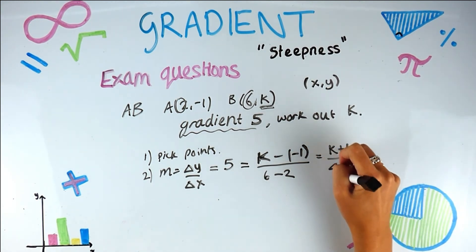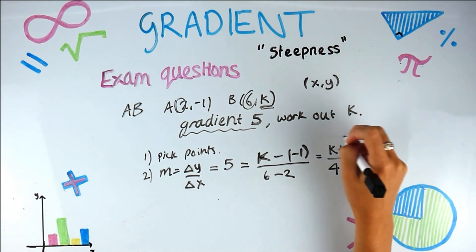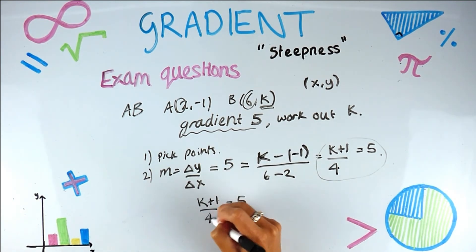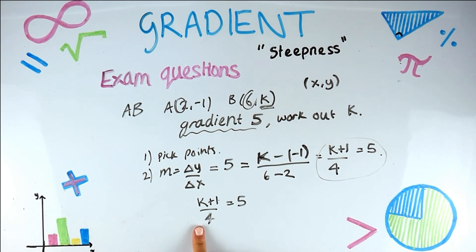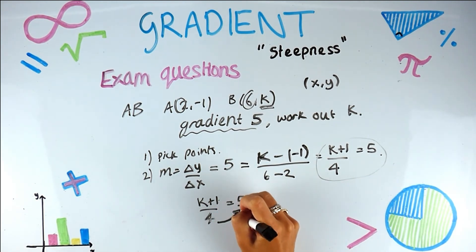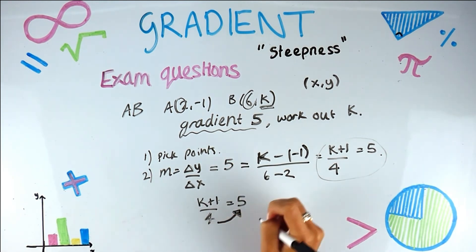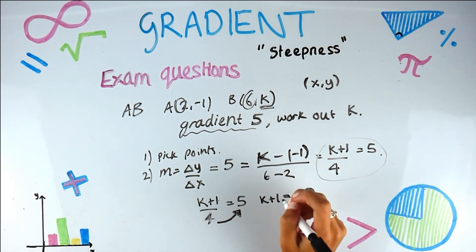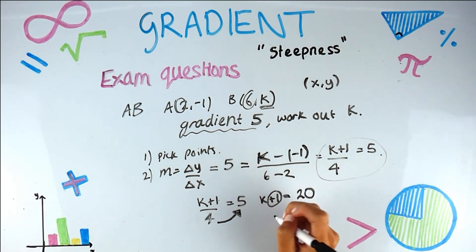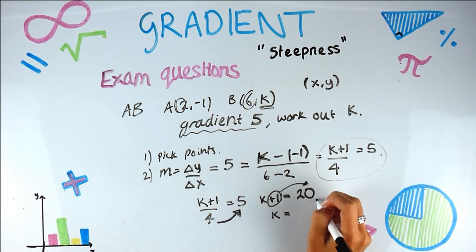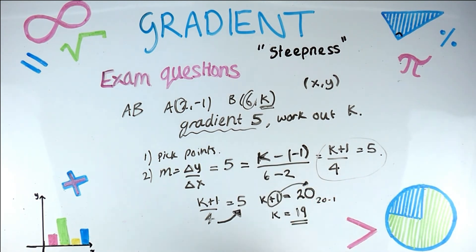I want to get k on its own. The four on the denominator is annoying me, so I multiply both sides by four — the inverse of dividing — to get k + 1 = 5 × 4 = 20. Now the plus one is annoying me, so k = 20 minus 1, which is 19. So k is 19.